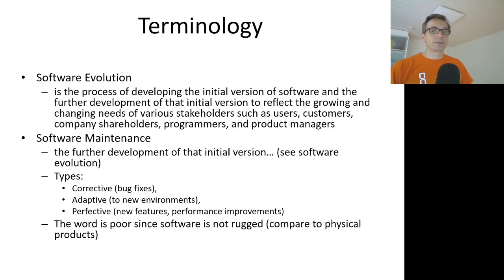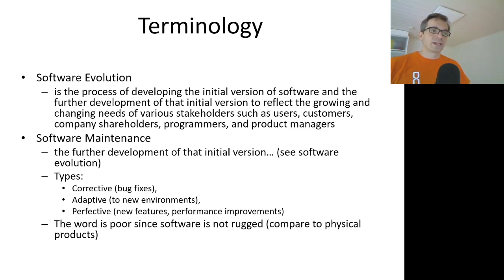Software maintenance is an often-used synonym for software evolution. Different types of software maintenance tasks have been identified, such as corrective, which means fixing bugs, and adaptive, which means modifying the software so that it can live and operate in a new environment.